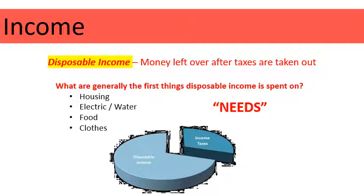So what are the things that we generally use our money for first? We use our disposable income to meet our needs — like housing, we need a place to live, electric, water, utilities, to buy food, to buy clothes. That's where disposable income goes — it's what we have left over after taxes are paid.